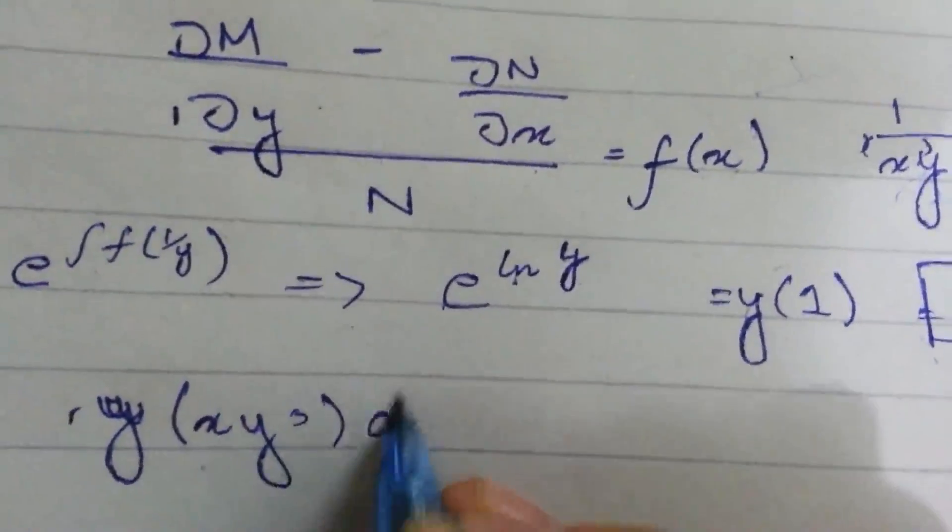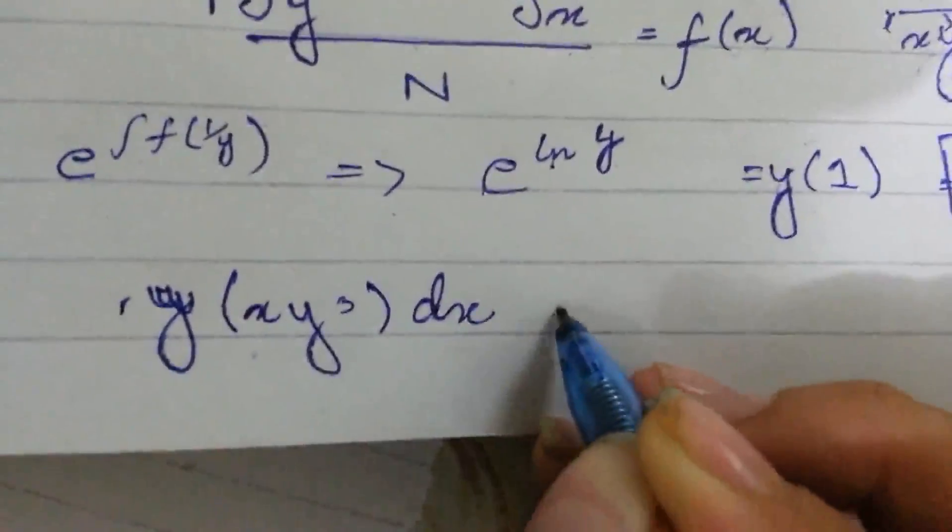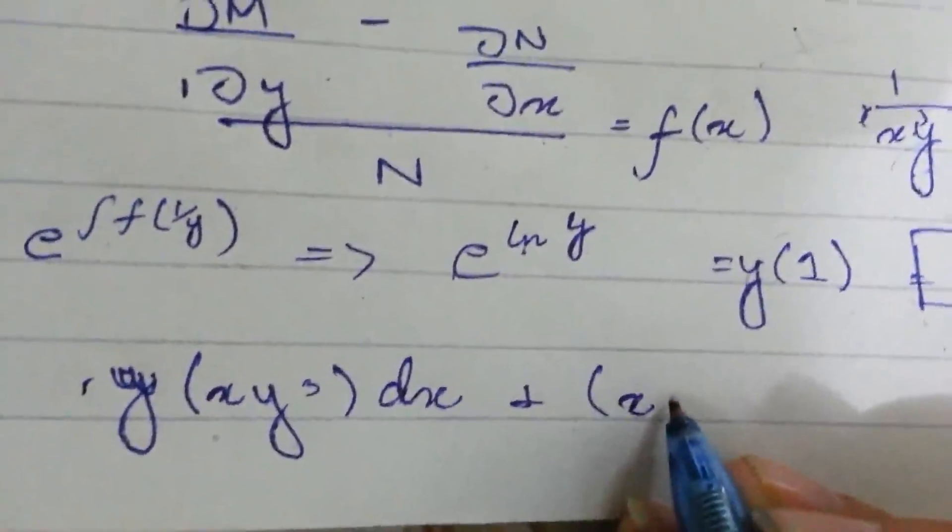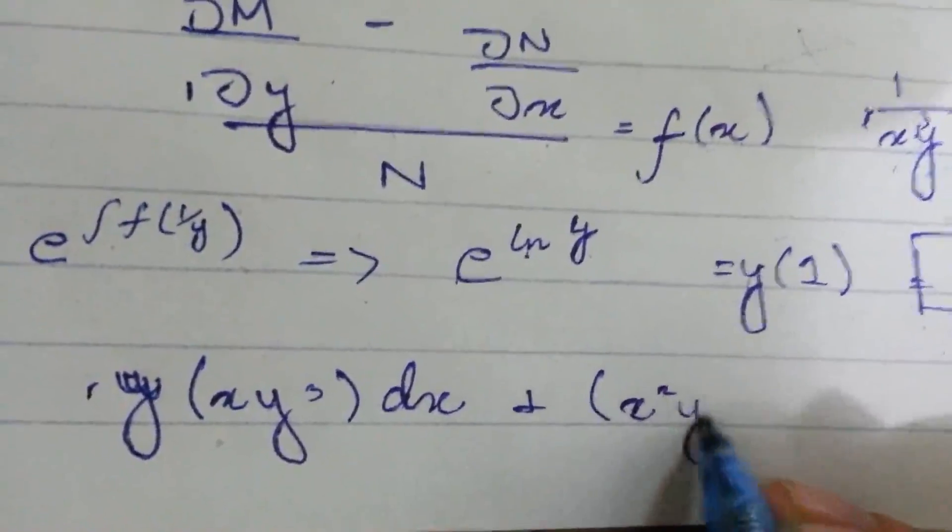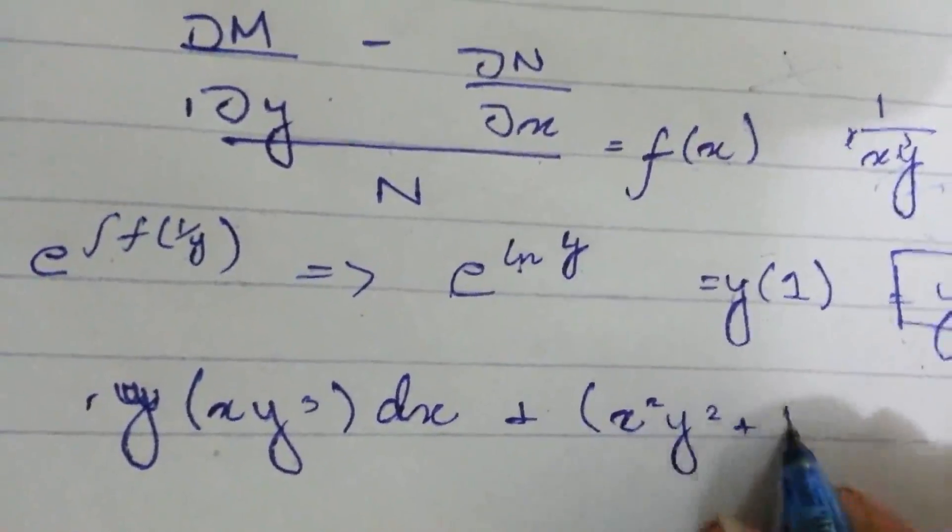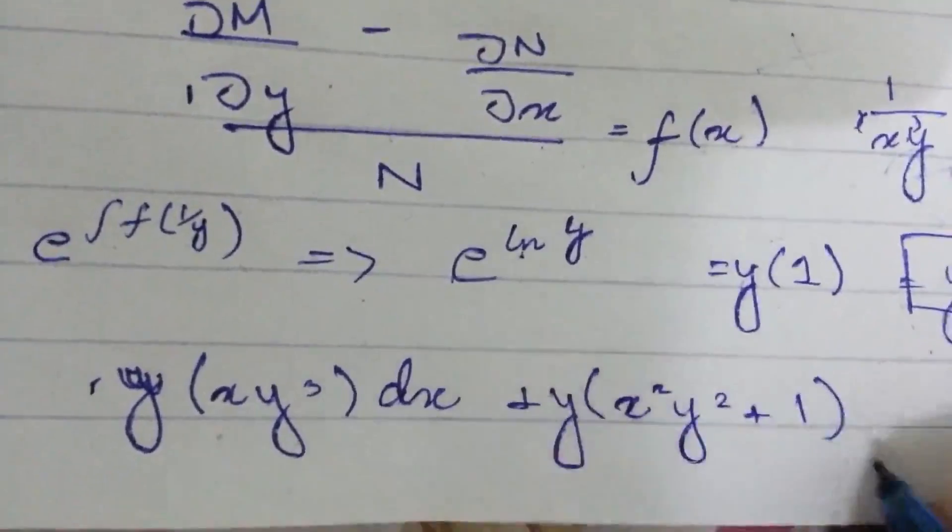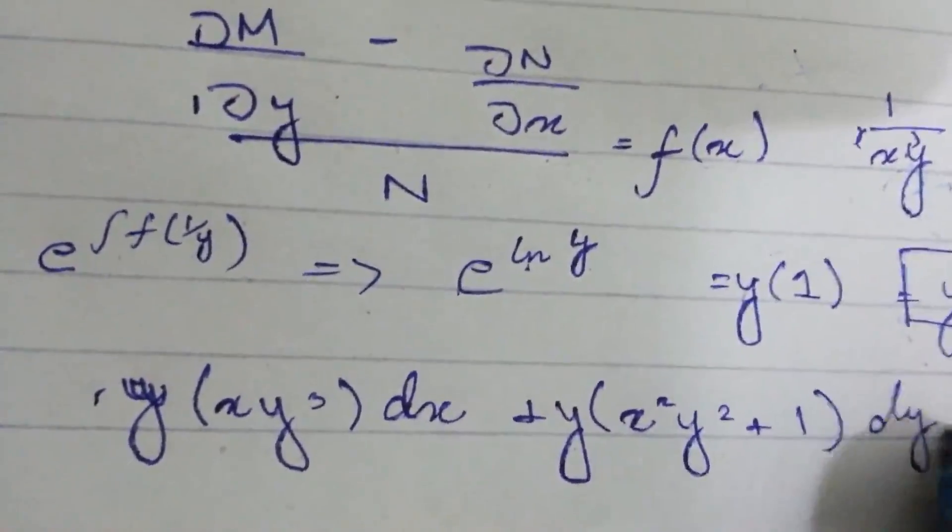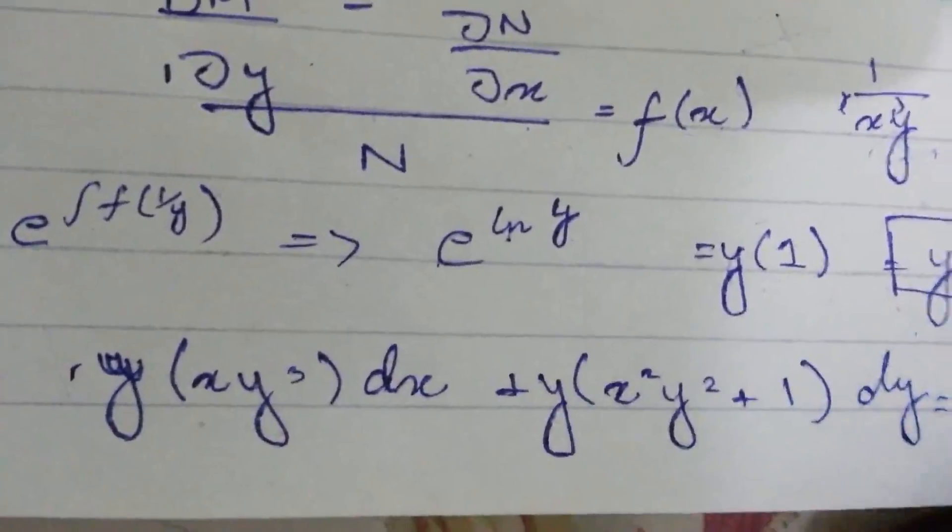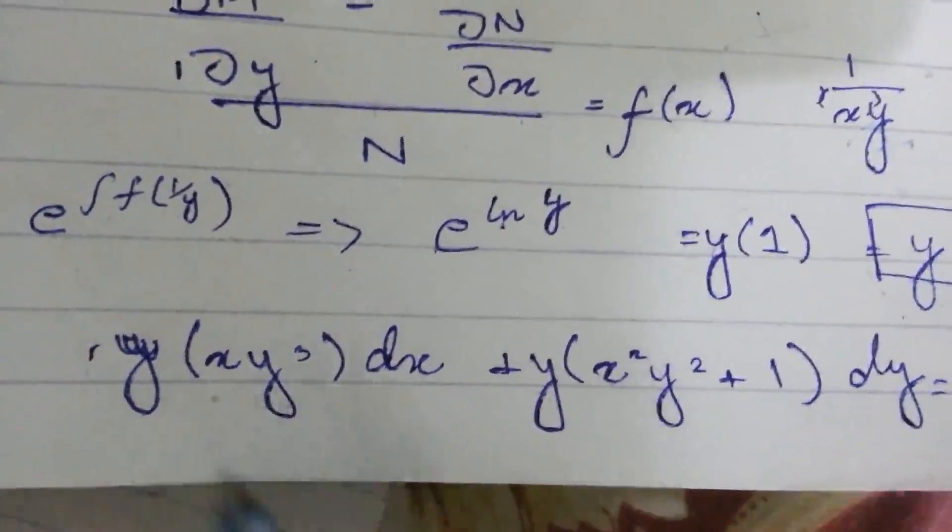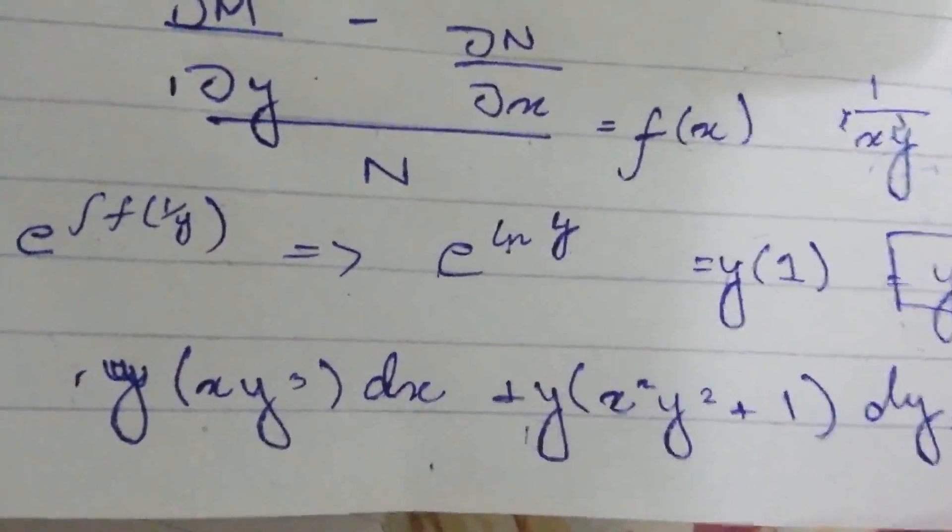Multiplying y with the equation: xy⁴dx + (x²y³ + y)dy = 0. Now this equation is in exact form. Thank you.